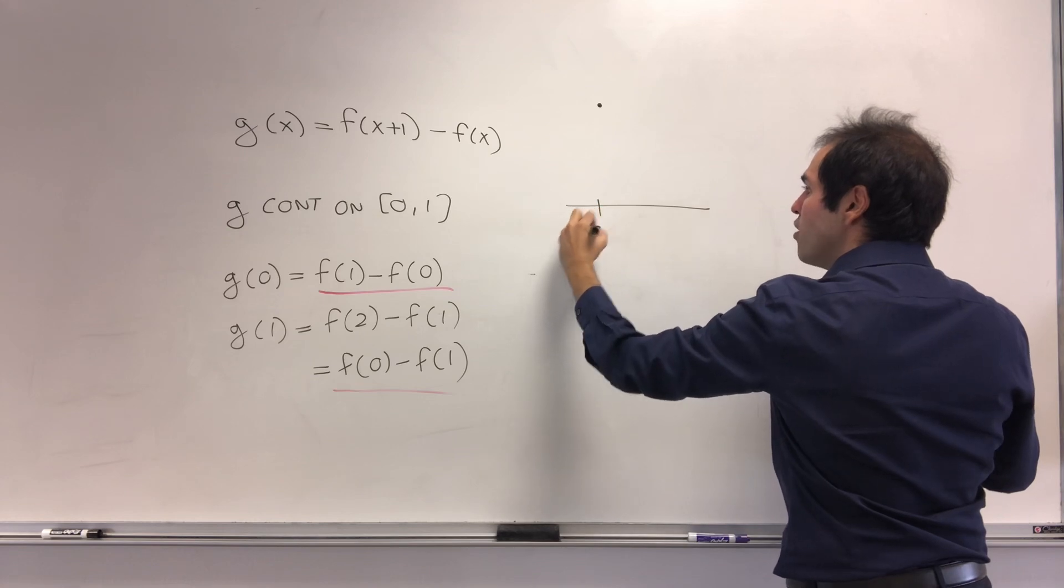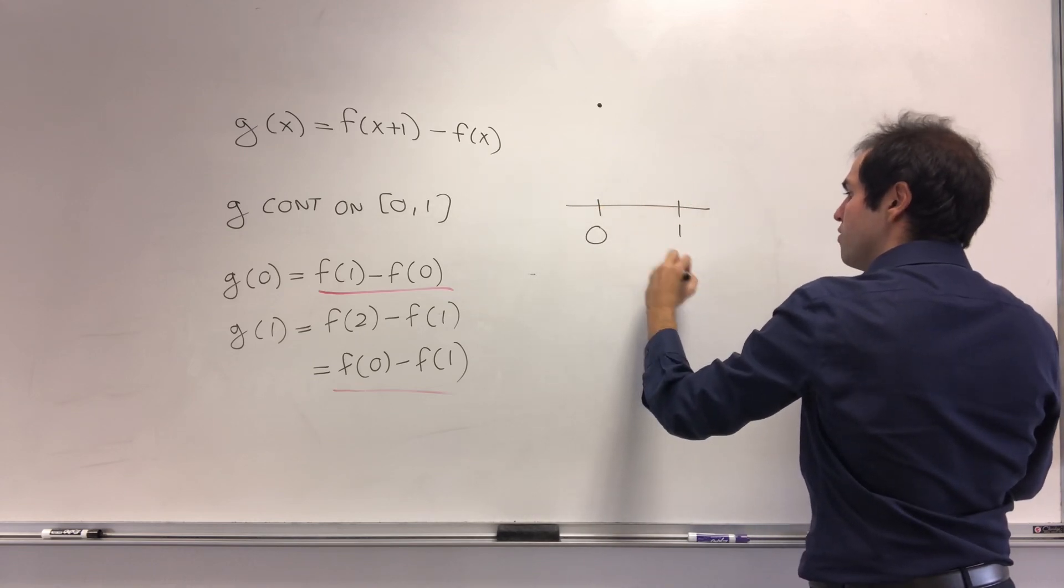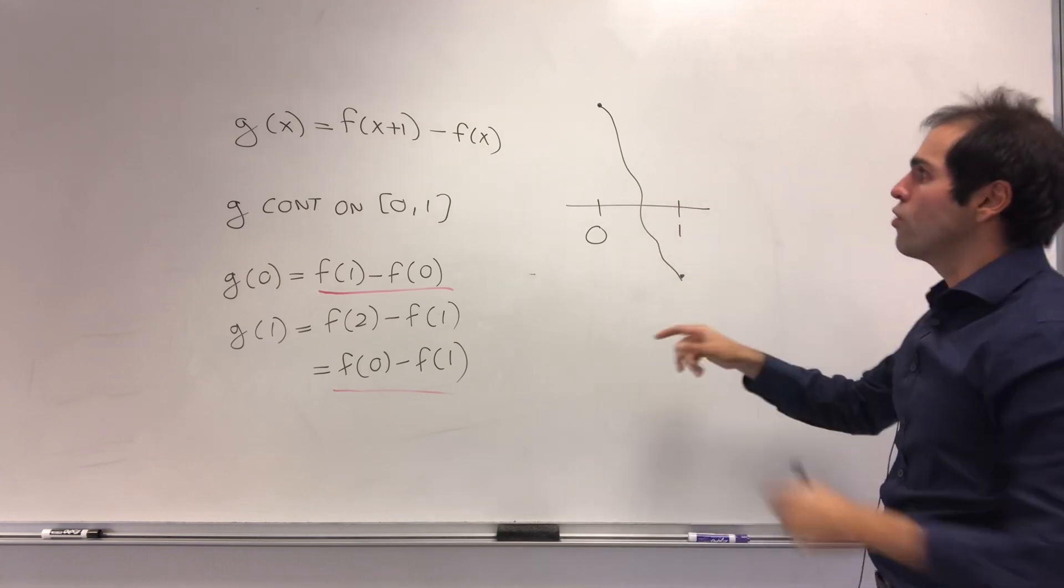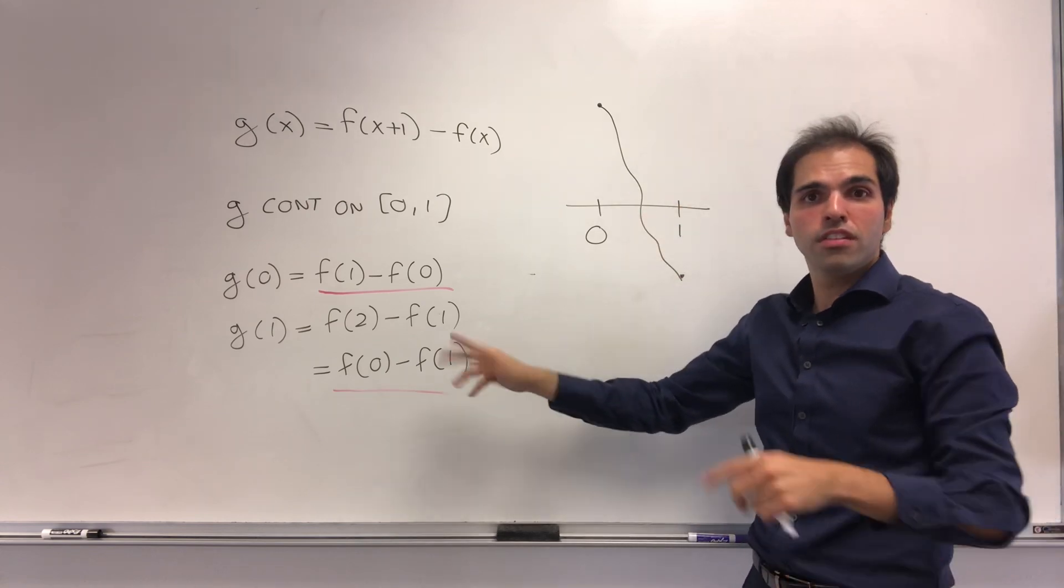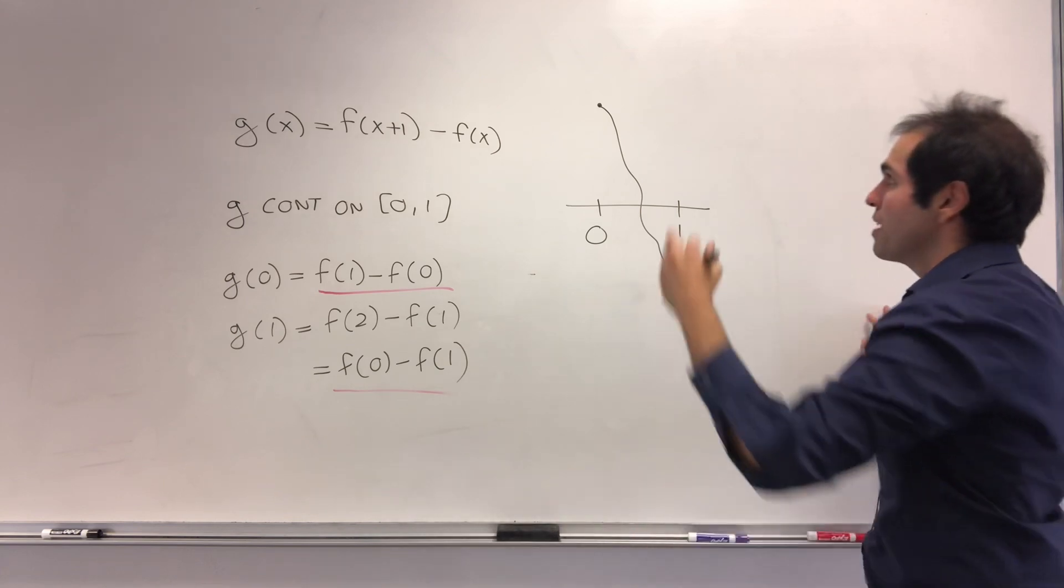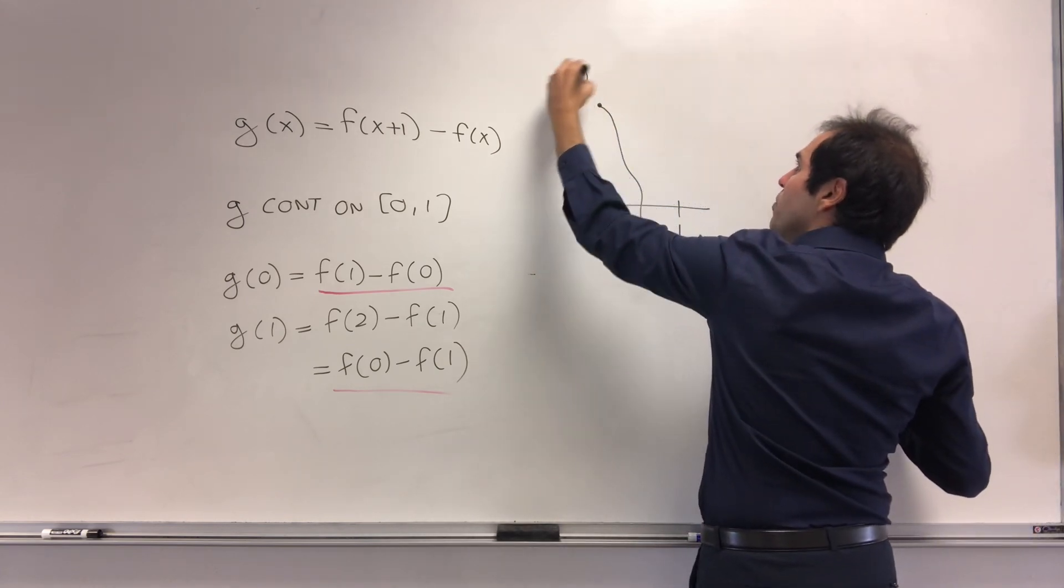Or the other way around - if this is negative, then the other value has to be positive, because it's just the opposite. So what can we tell about g? Well, it's positive at 0, negative at 1.